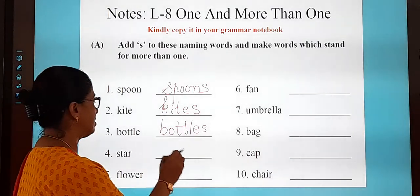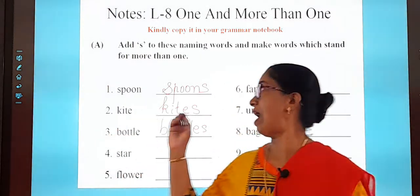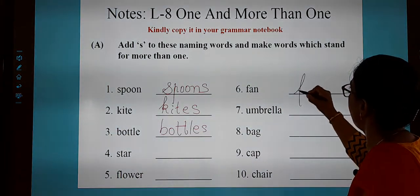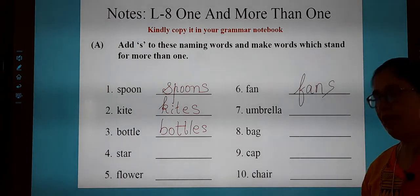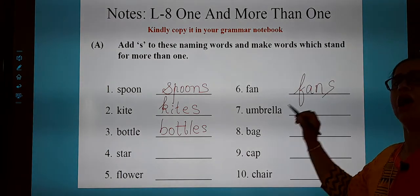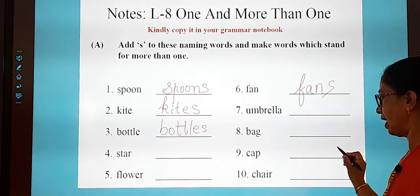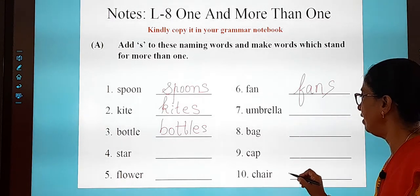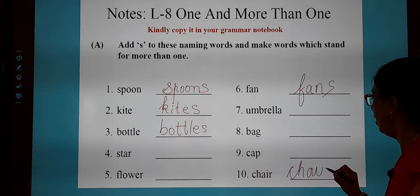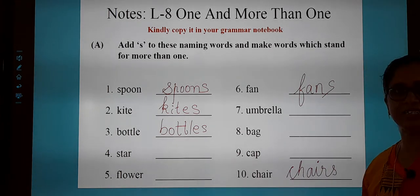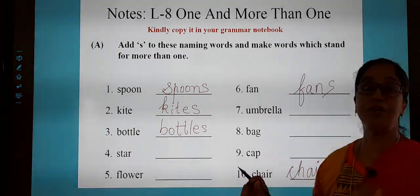I will read the words for you and you will just add S to make their plural. Star — stars. Flower — flowers. Fan — fans: F-A-N-S. Umbrella — umbrellas. Bag — bags. Cap — caps. And for chair — chairs: C-H-A-I-R-S. Just add S. Do it in your grammar notebook, very neat.